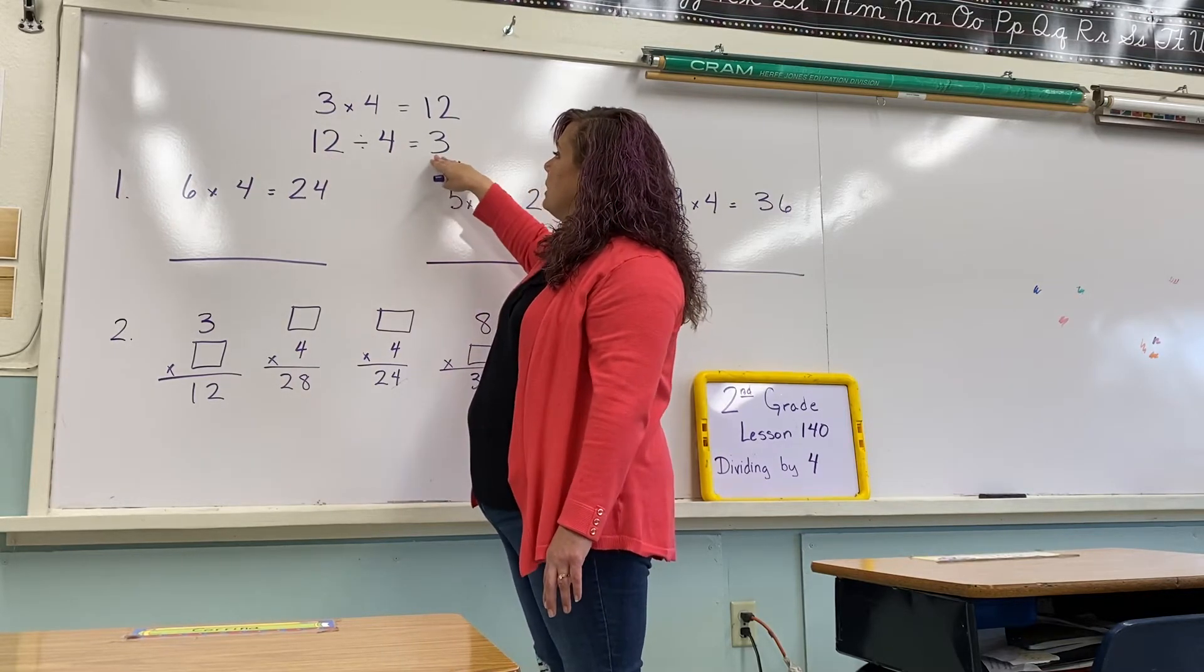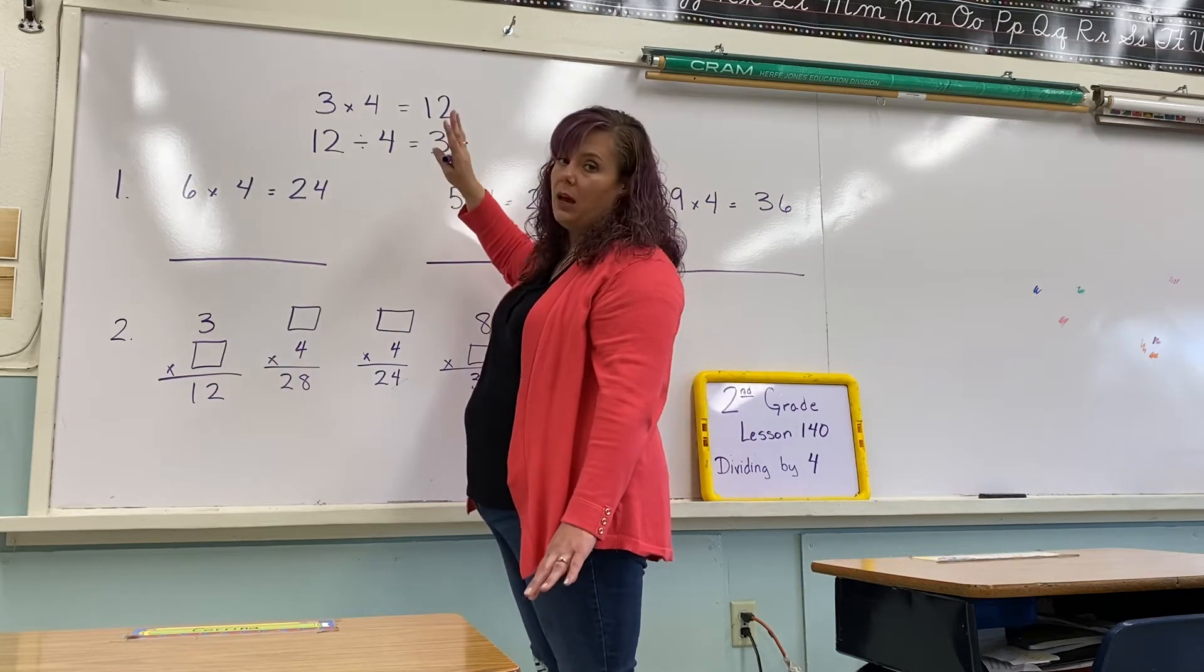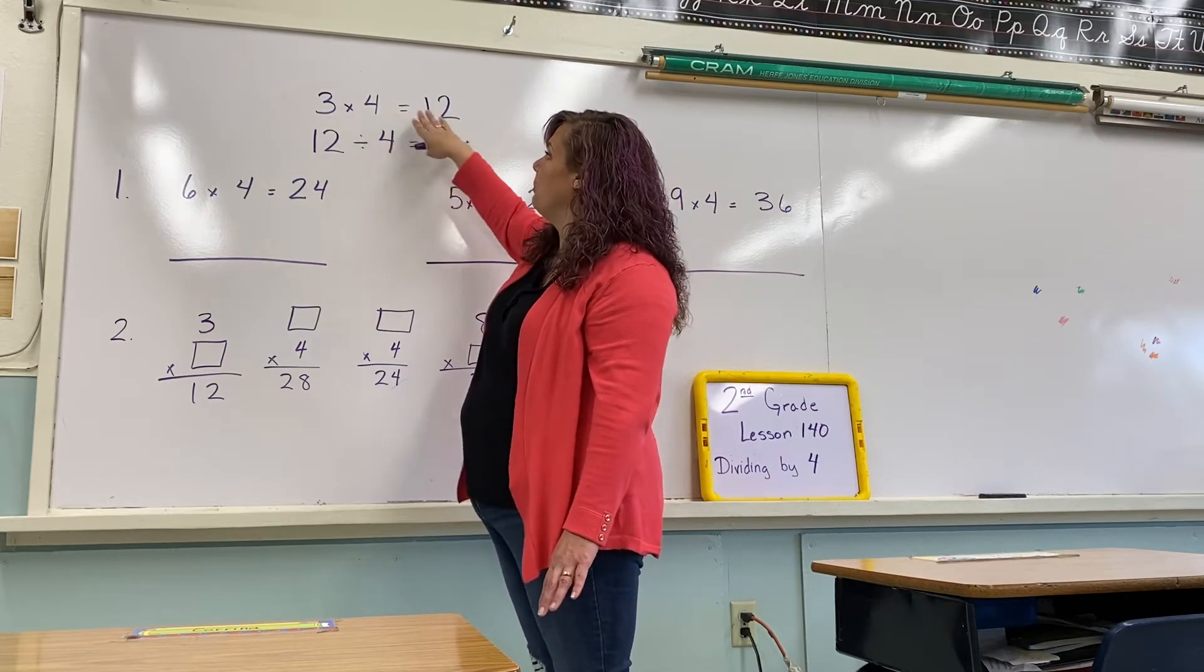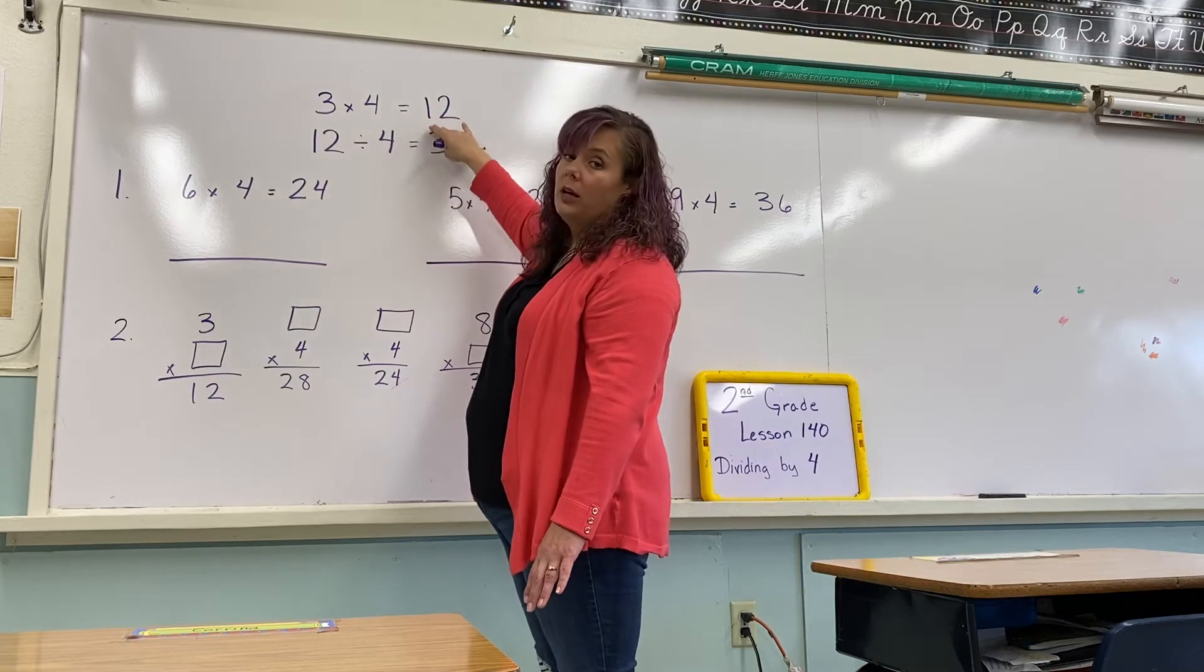So, 12 divided by 4 equals 3, because the multiplication problem, that's the opposite, you just flip them, is 3 times 4 equals 12.